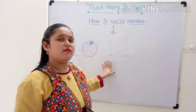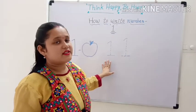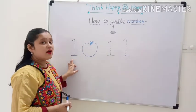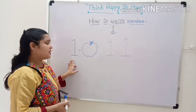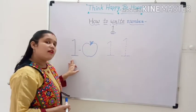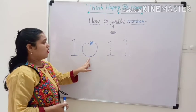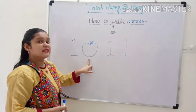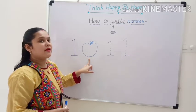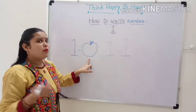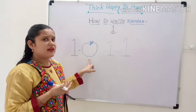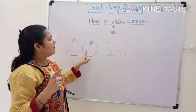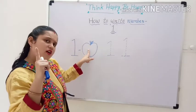How to write number one? Let's start. This is number one. Now tell me, what is this? This is an apple. And how many apples are there? One. How many apples are there? One.